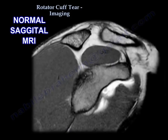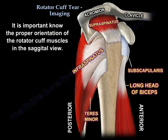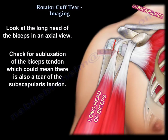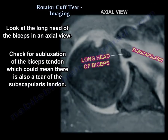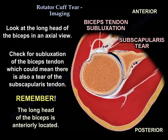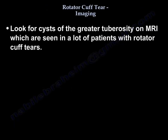It is important to know the location of the muscles in the sagittal view with proper orientation. In the sagittal view, you need to locate the supraspinatus and subscapularis on one side, and the infraspinatus and teres minor on the other side. Then look at the biceps — usually in an axial cut — to see if there is any subluxation of the biceps, which could indicate a subscapularis tear, especially of the superior part. Remember, the biceps is anteriorly located. Also, look for cysts on the greater tuberosity on MRI, which are seen in many patients with rotator cuff tear.